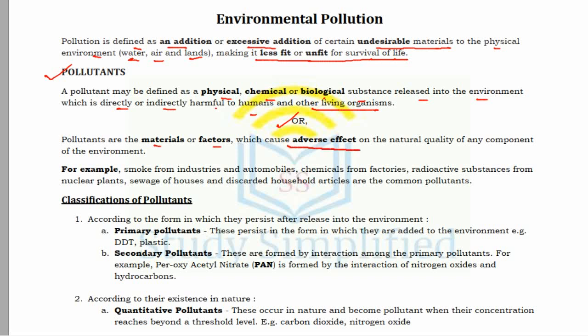Examples of pollutants include smoke from industries and automobiles, chemicals from factories, radioactive substances from nuclear power plants, and sewage from local houses and discarded household articles. These are common examples of different pollutants.